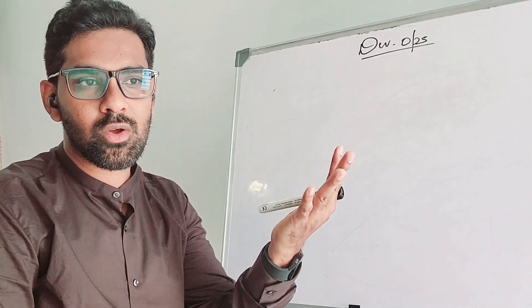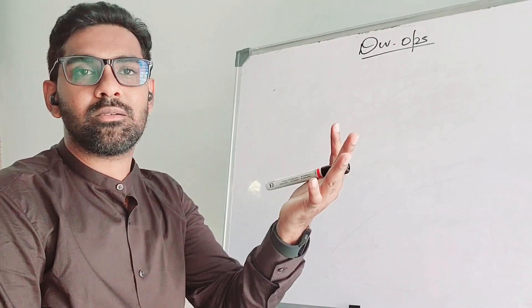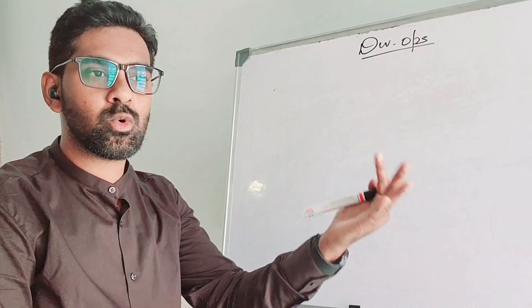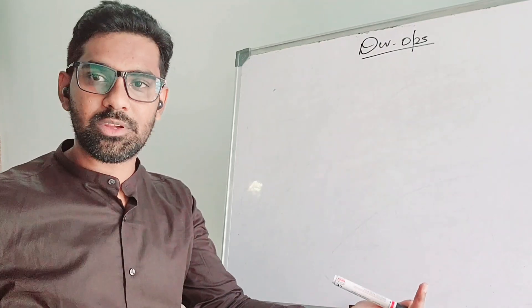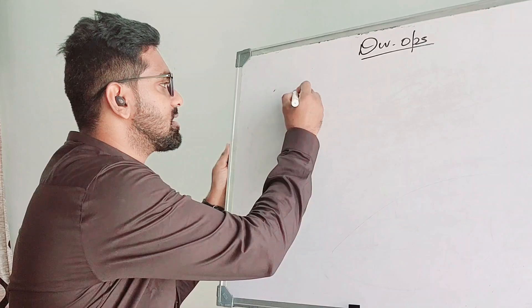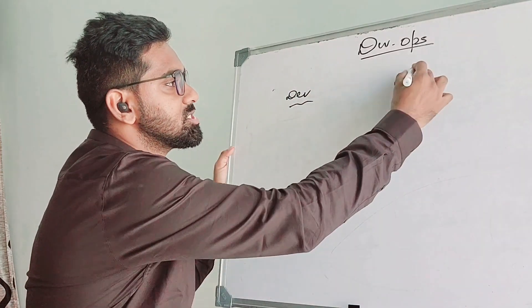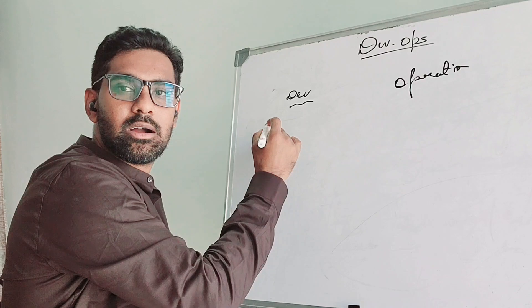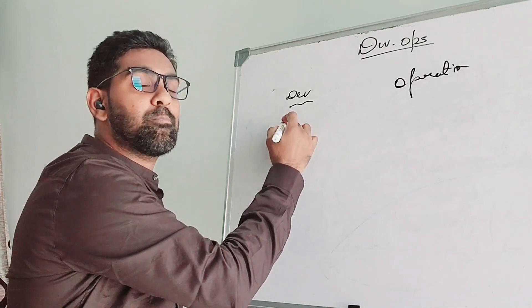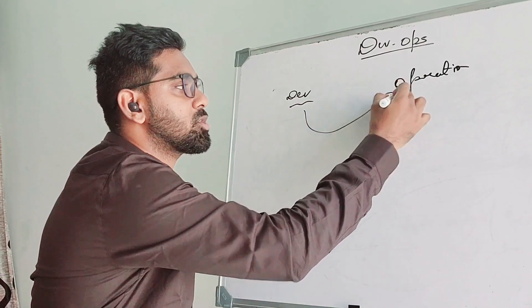Before, what used to happen: a software development team normally has two things. One who develops an application, another who actually works on that application. So the development team works on something, and the operation team actually does that particular job on that designed or built product from development to operation.